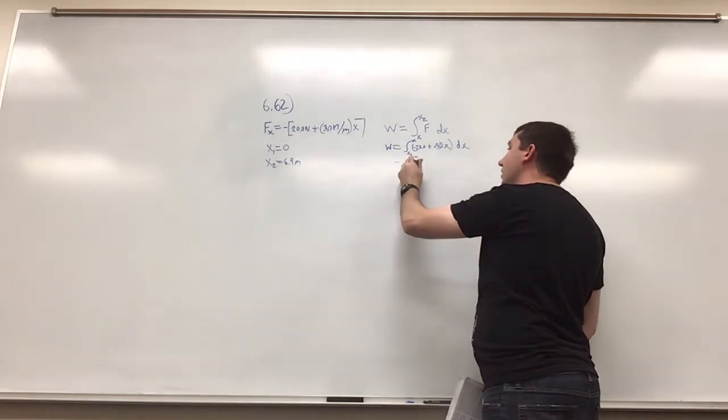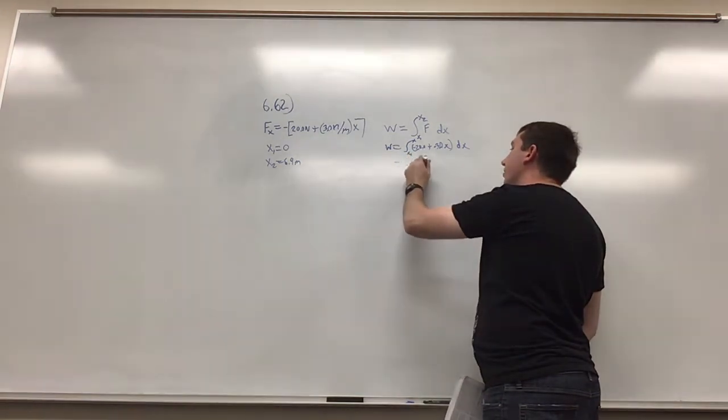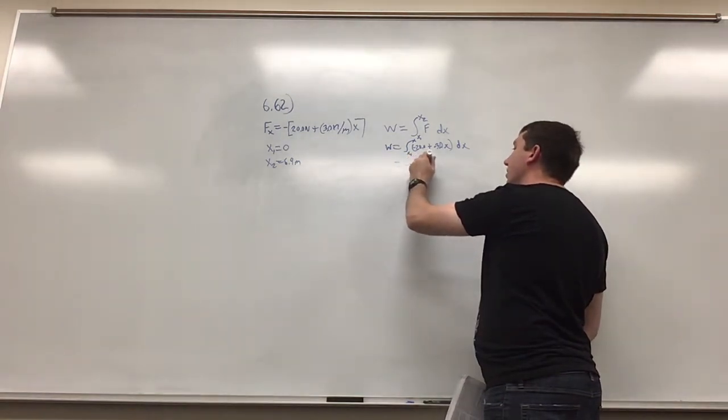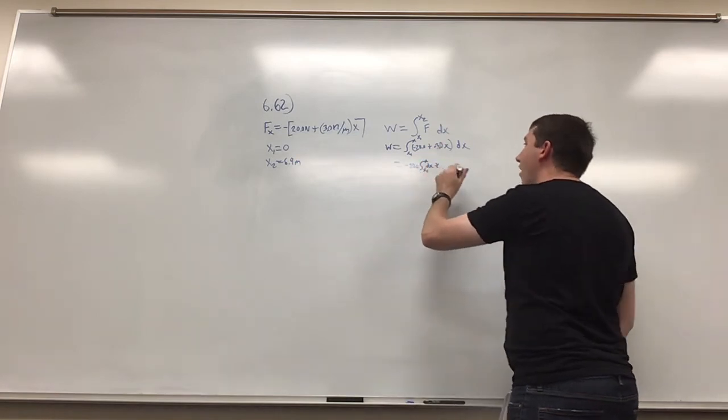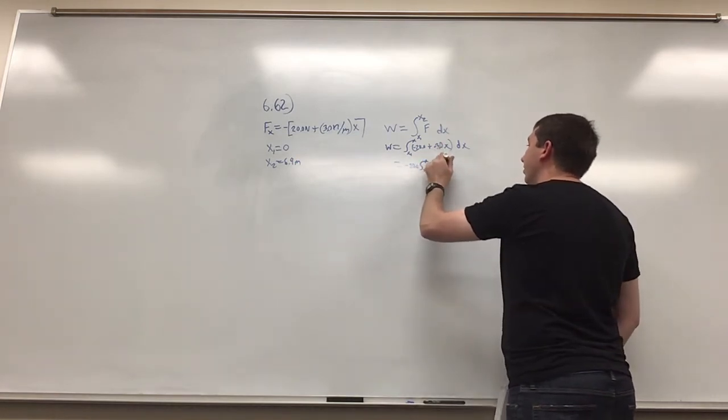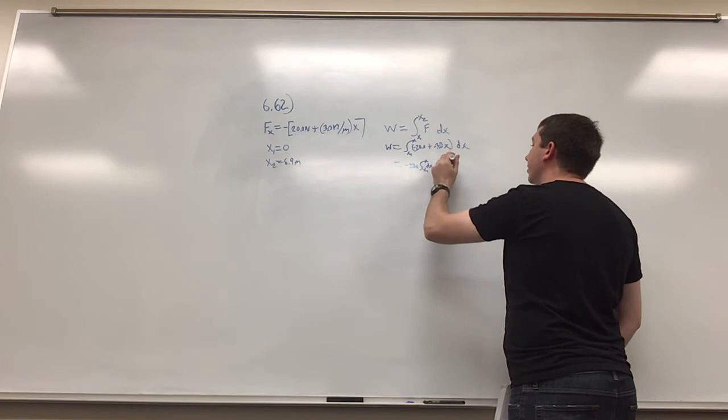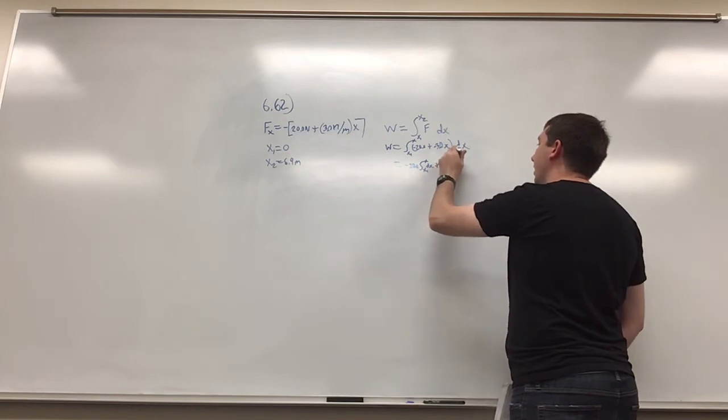So negative 20 integral of x1 to x2 dx, plus negative 3 integral from x1 to x2 of x dx.